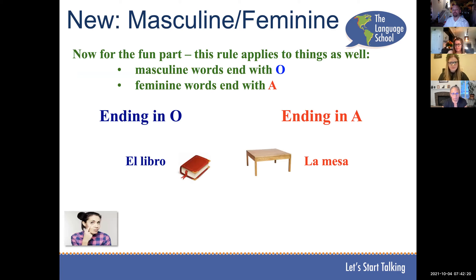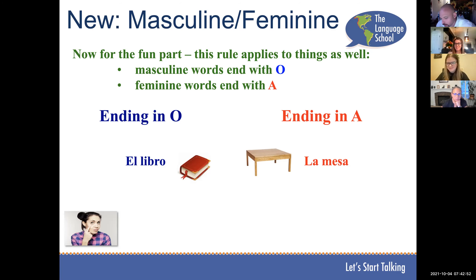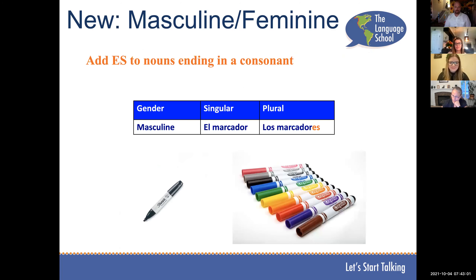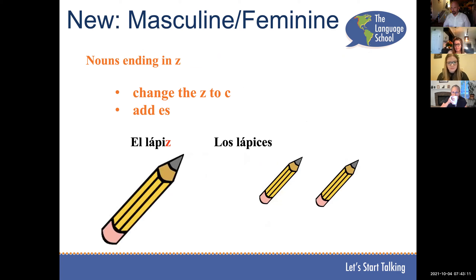This rule applies to things as well. El libro — ending with O indicates masculine. La mesa — the table is feminine. The real reason is that Latin worked this way, and all the Romance languages born from Latin work this way. There's no logic you can apply — just learn the words as they are. El marcador, los marcadores — because it ends with R, we add ES. El lápiz, los lápices — spelling changes the Z to a C before adding ES. This rule applies to words ending in Z.